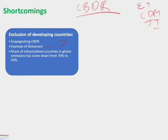So the CBDR yardstick becomes a problematic thing. Today, the share of industrialized countries in global emissions has come down from 70% to 43%. The most contribution now comes from developing nations. So developing nations should not hold on to the common but differentiated responsibilities principle — everyone has to reduce emissions. This is necessary.